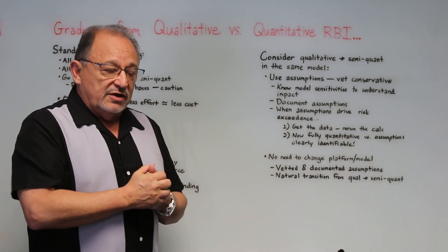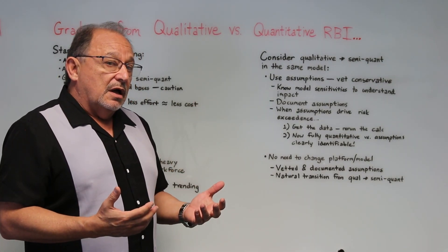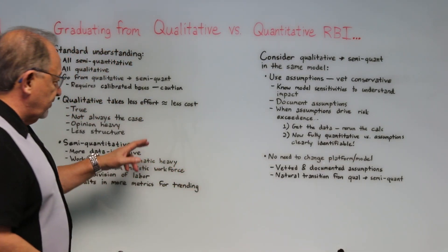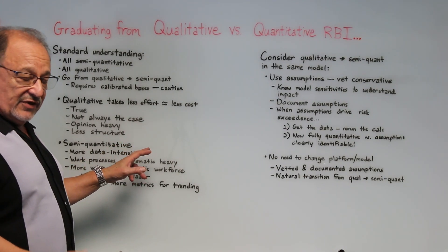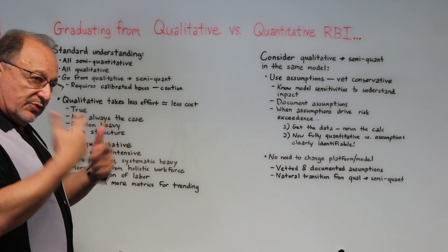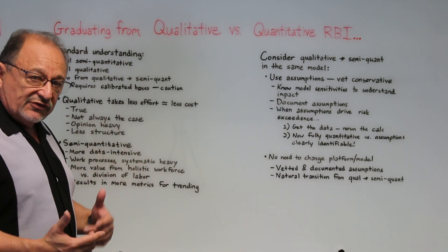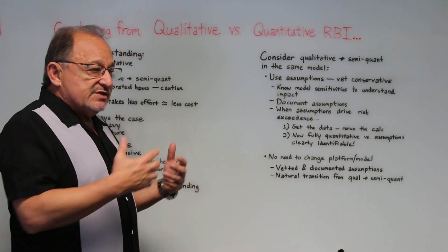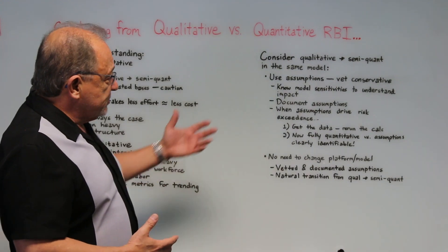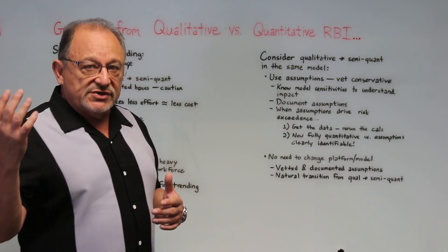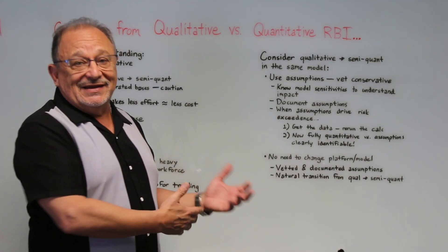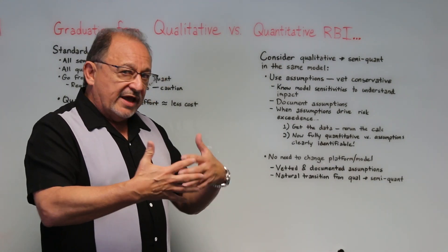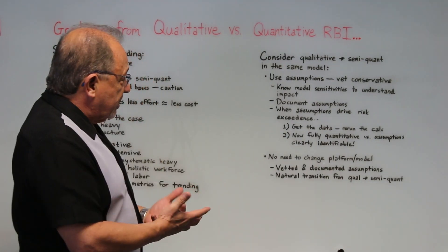An eye-opener for us was that some equipment wound up at higher risk in the semi-quantitative study. I think it was because of the systematic nature of the semi-quantitative approach over the qualitative — it causes a structured, systematically-enabled critical thinking process that asks more questions to get a better answer. Some items wound up higher risk after semi-quantitative than after qualitative, which was unnerving but a big eye-opener because the two platforms weren't calibrated or reconciled against one another.